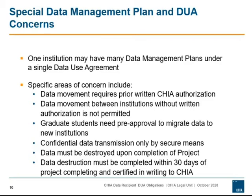Another important provision of the data use agreement requires that any CHIA data, prior to being reduced to an aggregate and cell suppressed format, may not be transmitted or removed in an insecure manner. If the means of transfer or movement are not specifically permitted in the approved data management plan, written permission to use that means is required in advance from CHIA. It is the responsibility of the institution and of each research team to ensure that CHIA data for any project is used, stored, transmitted, accessed, and ultimately destroyed in full compliance with the terms of the applicable data management plan. Each research team should ensure that its institution's security and IT staff understand their responsibilities under the DUA and under the data management plan.